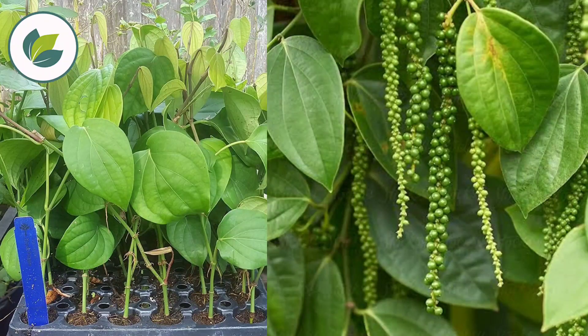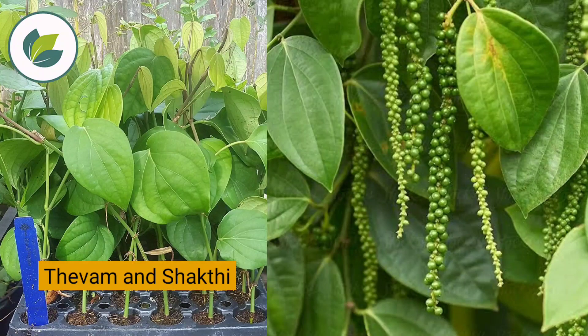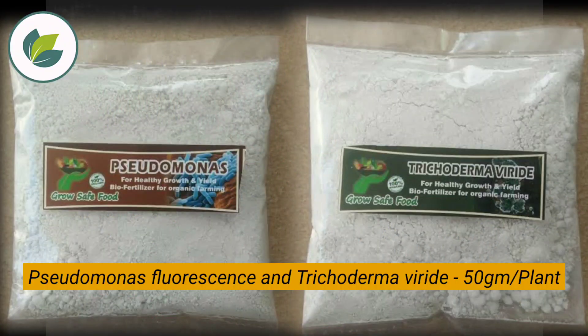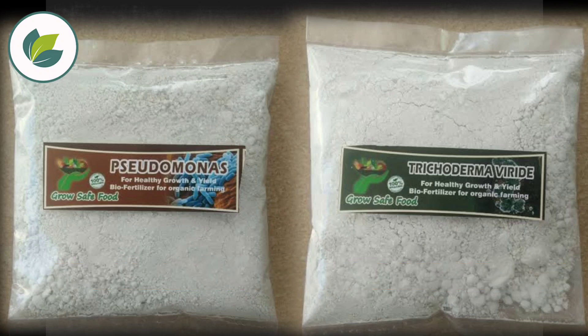To manage this disease, grow fruit rot resistant cultivars like Devam and Shakti. Pull out affected plants and burn them. Use bio-control agents like Pseudomonas fluorescens and Trichoderma viride at 50 grams per plant.